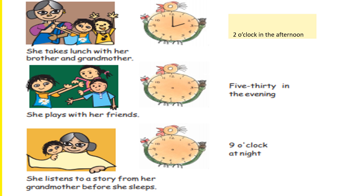She plays with her friends and the time given is 5:30 in the evening. 30 minutes means the minute hand should be at 6, because 6 times 5 is 30. The hour hand should be just beyond 5 because half of the hour has already passed, so the time on the clock is 5:30.